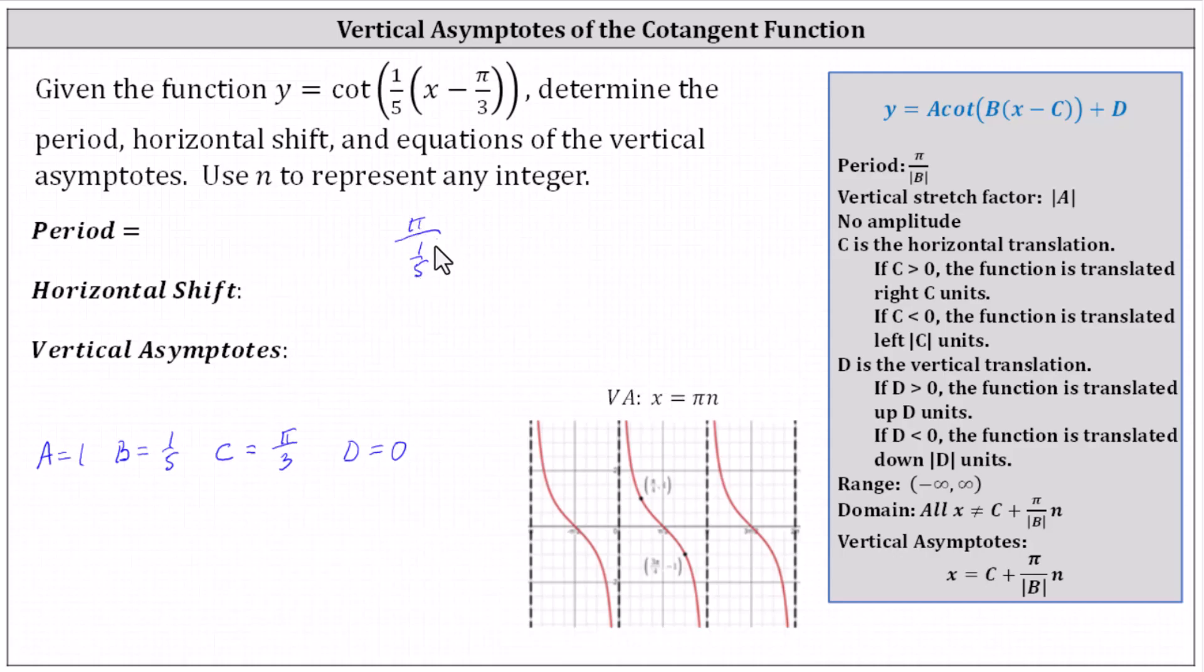Recall dividing by a fraction is equivalent to multiplying by the reciprocal. This indicates pi divided by one fifth equals pi times five divided by one, or five, which equals five pi. The period is five pi radians.